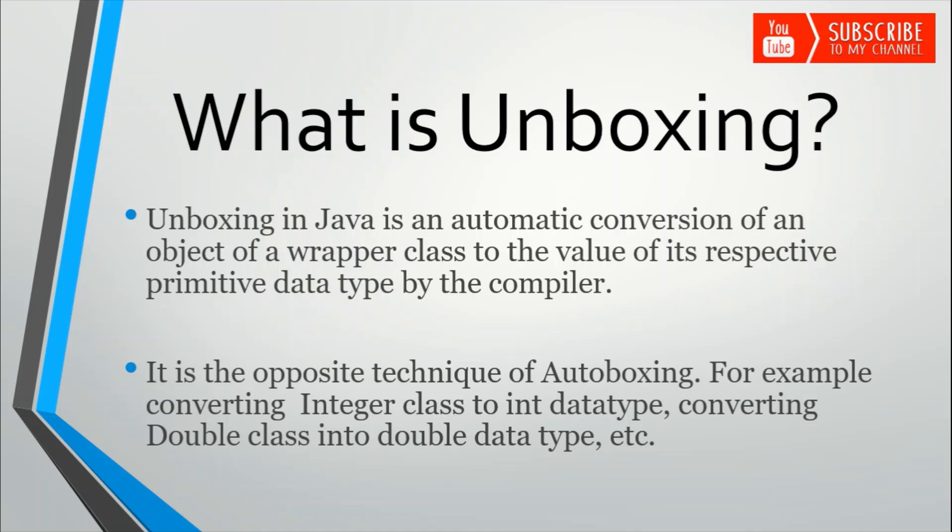Now let's see what is unboxing. Unboxing in Java is the automatic conversion of an object of the wrapper class to the value of its respective primitive data type. These conversions are done automatically by the compiler. This is quite opposite to autoboxing — in autoboxing we convert from primitive to objects, and here we convert from object to primitive data types.